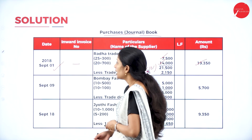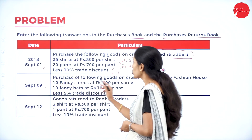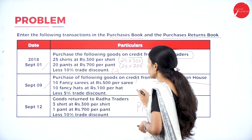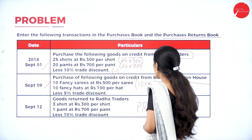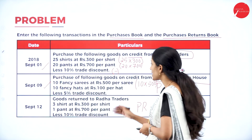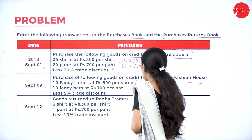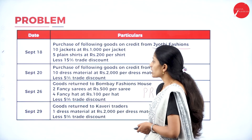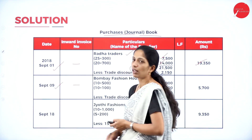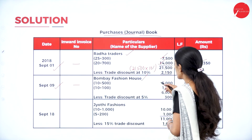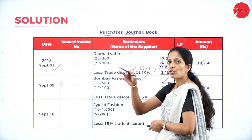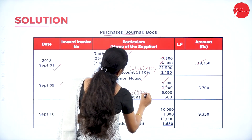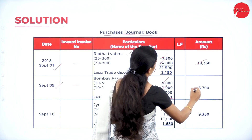Next purchase entry — September 9th, supplier Bombay Fashion House, no inward invoice number. Calculate: 10 fancy saris × Rs. 500 = Rs. 5,000; 10 fancy hats × Rs. 100 = Rs. 1,000; total Rs. 6,000. Less trade discount at 5%: 6,000 × 5% = Rs. 300. So 6,000 − 300 = Rs. 5,700.